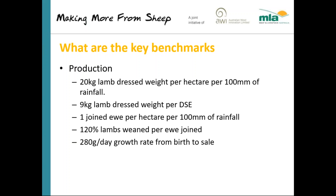Starting with the production benchmarks, a key one is production per hectare — I've given it as 20 kilograms lamb dressed weight per hectare per 100 millimetres of rainfall. So if you're in a 600 mm rainfall zone, that's 20 kg times 6, which is 120 kg of lamb dressed weight per hectare over the whole effective area that the primary enterprise grazes.